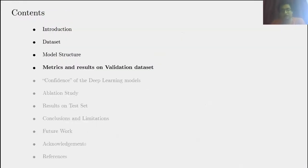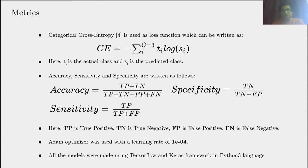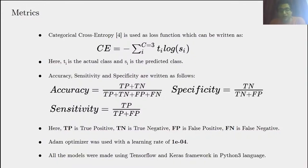For training the models, we used categorical cross-entropy as the standard loss function, which can be written as this equation, where Ti is the actual class and Si is the predicted class. For comparing metrics, we used accuracy, sensitivity, and specificity, defined using true positive (Tp), true negative (Tn), false positive (Fp), and false negative (Fn). For optimization, we used the Adam optimizer with a learning rate of 1e-4. All models were built using TensorFlow and Keras in Python 3.